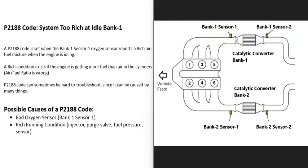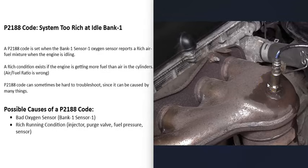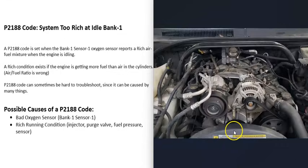The main sensor to check when you get this P2188 code is the Bank 1 Sensor 1 O2 sensor. The first thing to do is locate that sensor on your vehicle and test it to make sure it's good. There are different ways to test those sensors, and there are good YouTube videos on that — I've made videos on it as well, and I'll put a link in the description below.